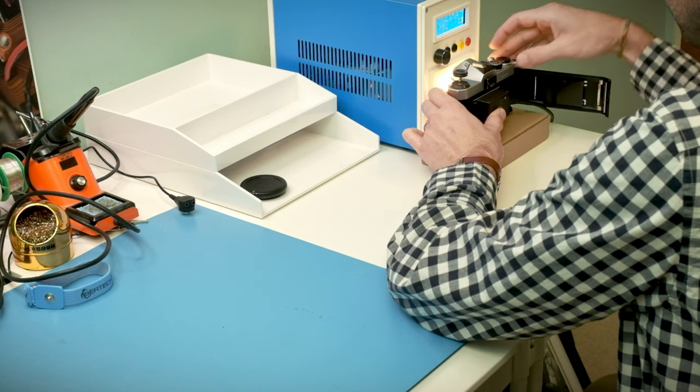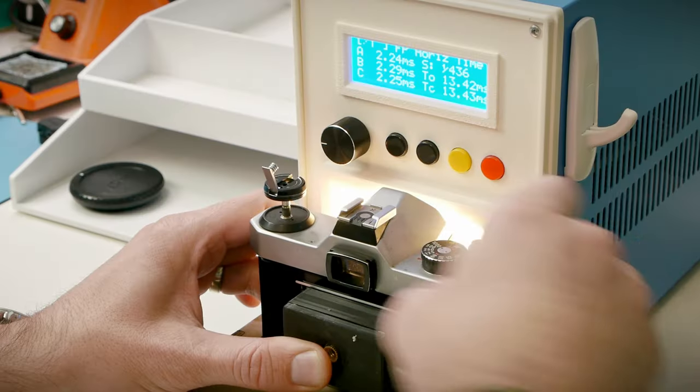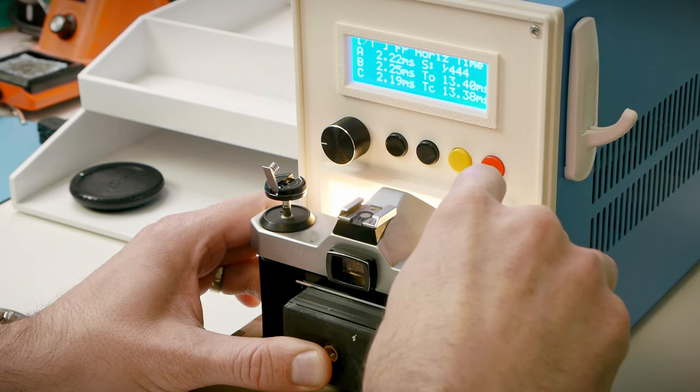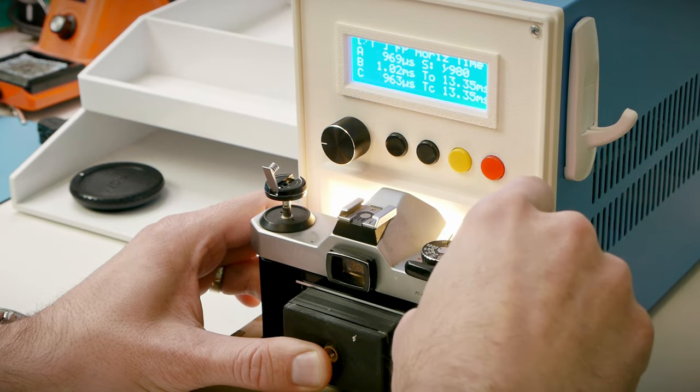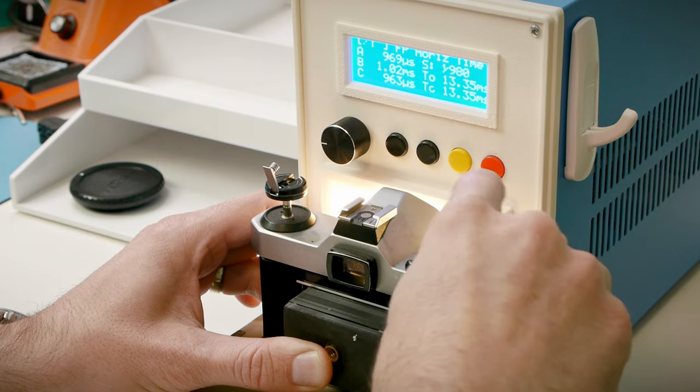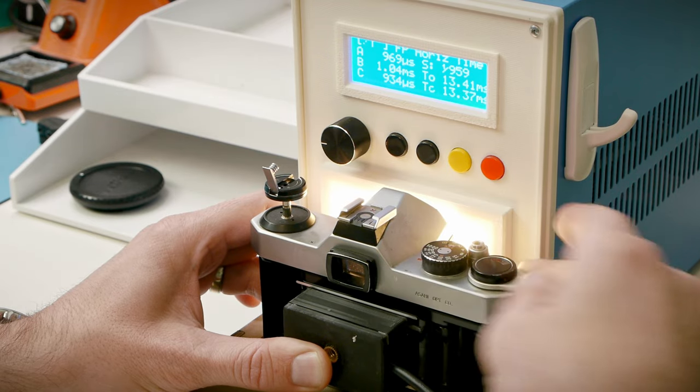This is where the slit width created by the shutter curtain starts to get narrow. All right, 1/440th, not bad. Can we get a good speed at 1/1000? Wow, 1/900th. Okay, I'm honestly impressed. I did not expect that.